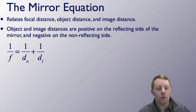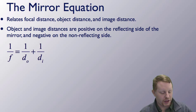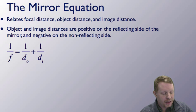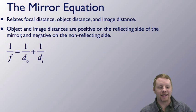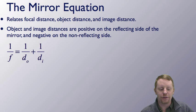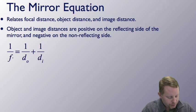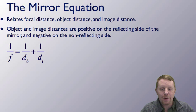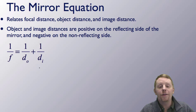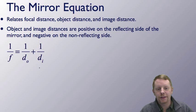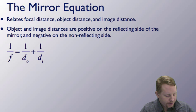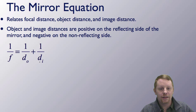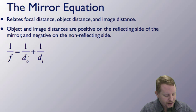We can also describe these quantitatively by looking at the mirror equation. It relates focal distance, object distance, and image distance. Object and image distances are positive on the reflecting side of the mirror and negative on the non-reflective side. One over f equals one over the object distance plus one over the image distance. An easy mnemonic from physics teacher Mike Palin: 'If I do, I die' — helping you remember that formula.